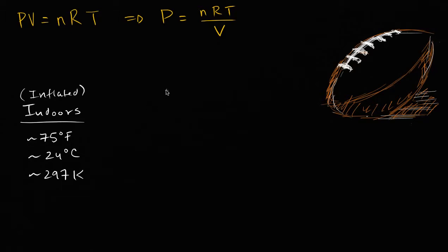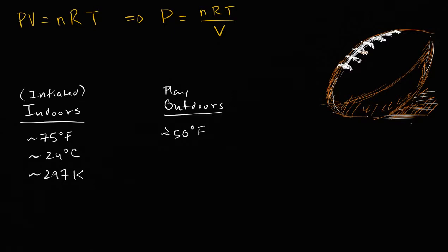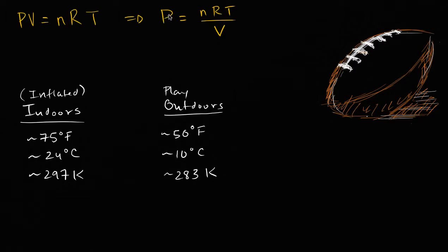The balls were inflated indoors, and then played outdoors, where the temperature is roughly 50 degrees Fahrenheit — and from what I've read, that was actually the temperature on the field during the New England game. 50 degrees Fahrenheit is approximately 10 degrees Celsius, which is approximately 283 Kelvin. So the argument is: you have this temperature drop — could that account for the pressure drop that was actually measured?